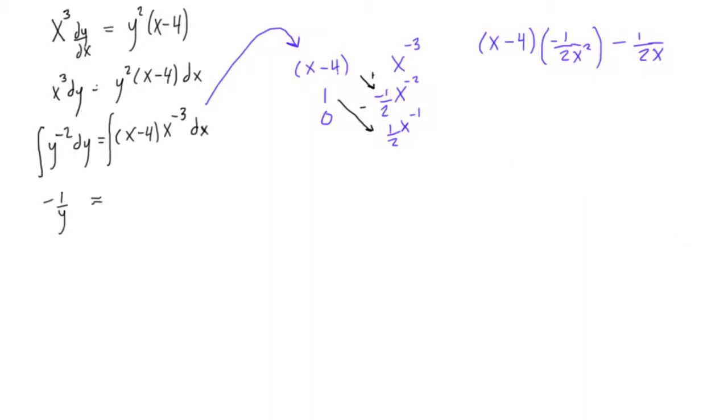So anyways, let's go back. So we found what the integral of the right-hand side is. It is, well, there's a minus, x minus 4 times 1 over 2x squared minus 1 over 2x. All right, and we need to put in that integration constant somewhere, so let's just put it here.